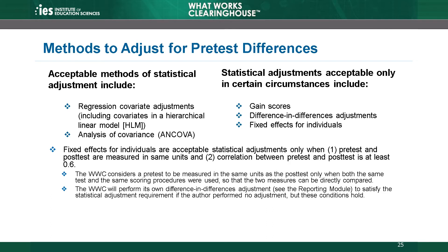Second, the authors must demonstrate that the correlation between the pretest and posttest is at least .6. These methods may not appropriately adjust for the baseline measure when this correlation is too low.